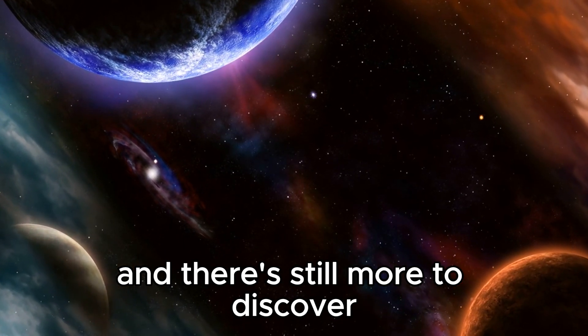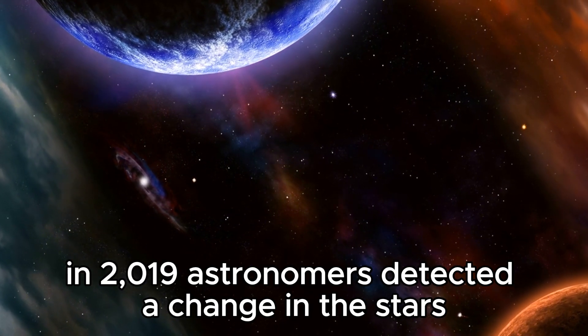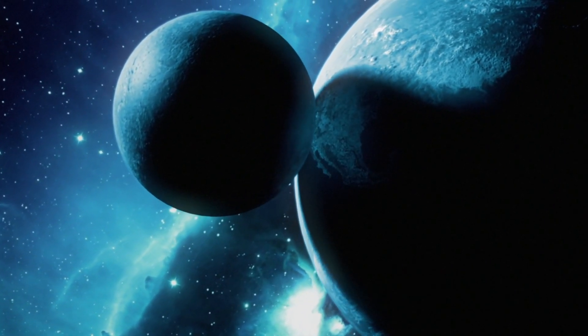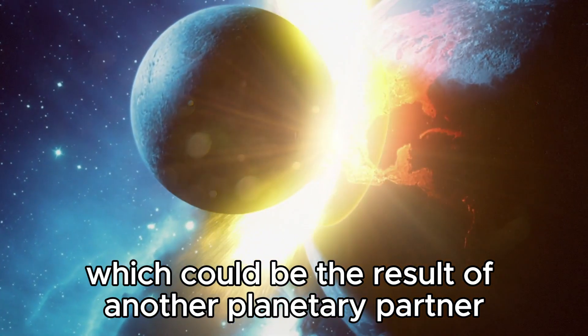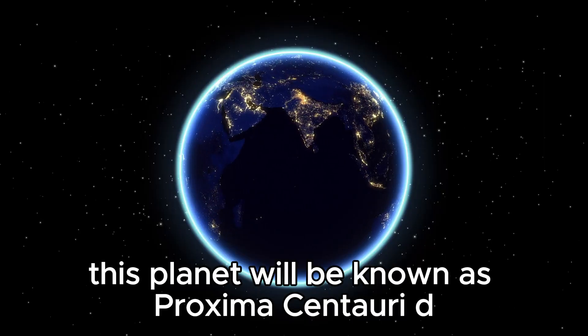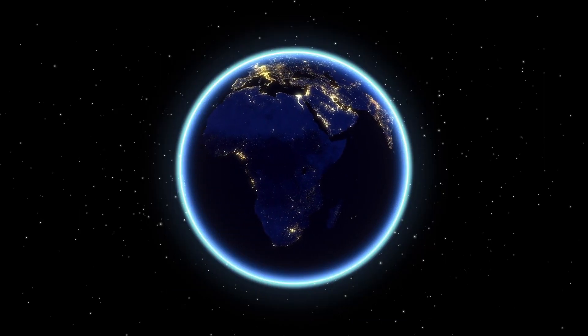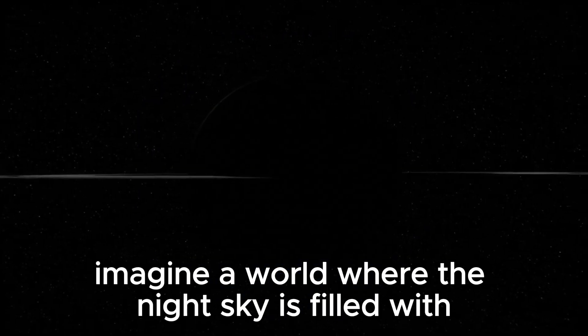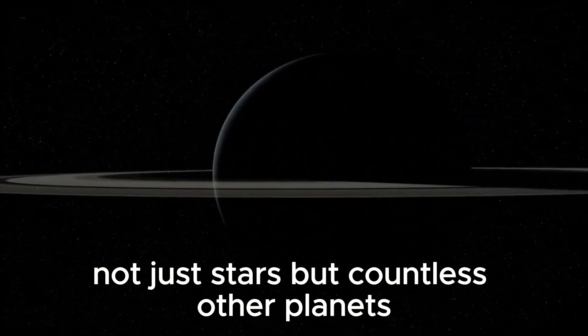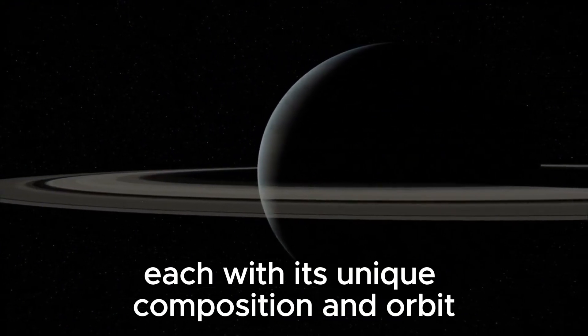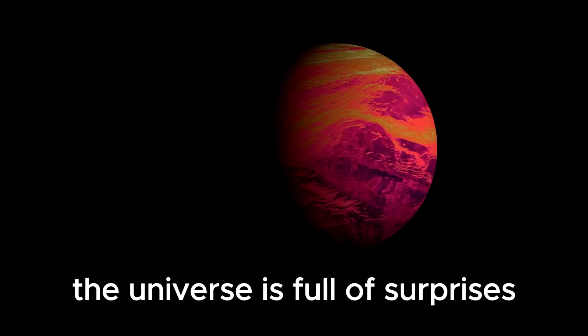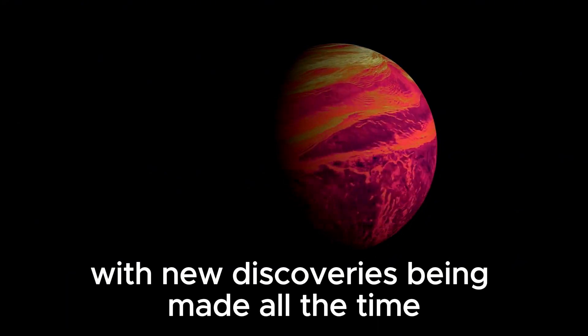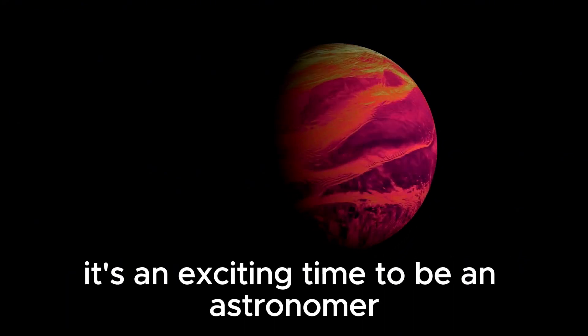And there's still more to discover in the Proxima Centauri system. In 2019, astronomers detected a change in the star's radial velocity, which could be the result of another planetary partner. If confirmed, this planet will be known as Proxima Centauri d and will be roughly the size of Mercury or Mars. Imagine a world where the night sky is filled with not just stars but countless other planets, each with its unique composition and orbit. The universe is full of surprises, and exoplanets are just one of them. With new discoveries being made all the time, it's an exciting time to be an astronomer.